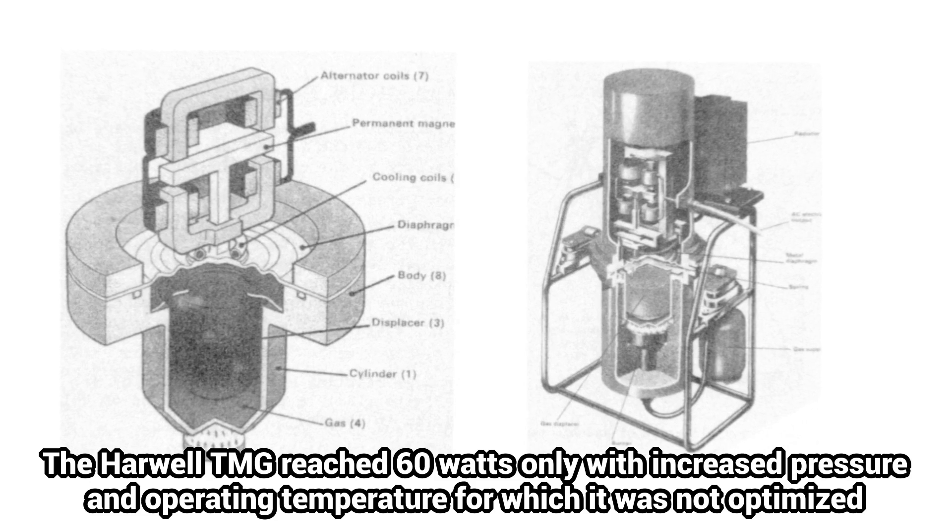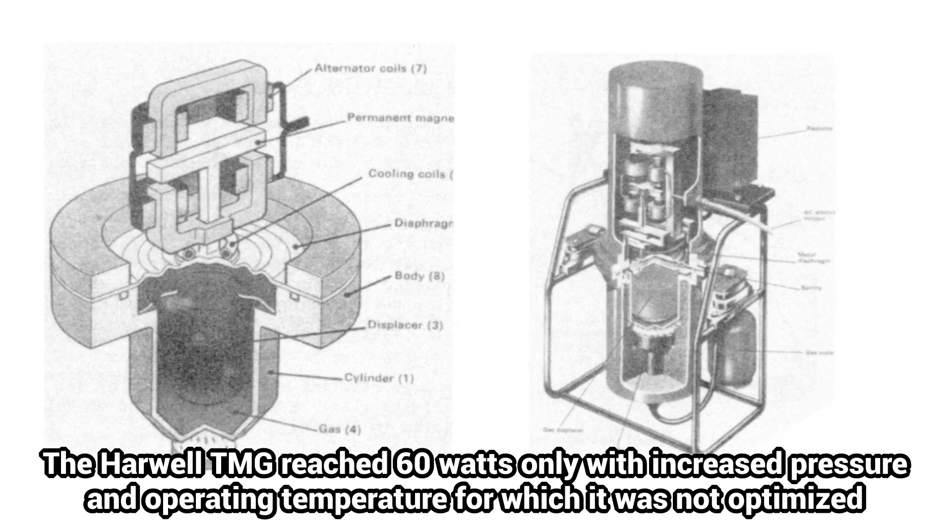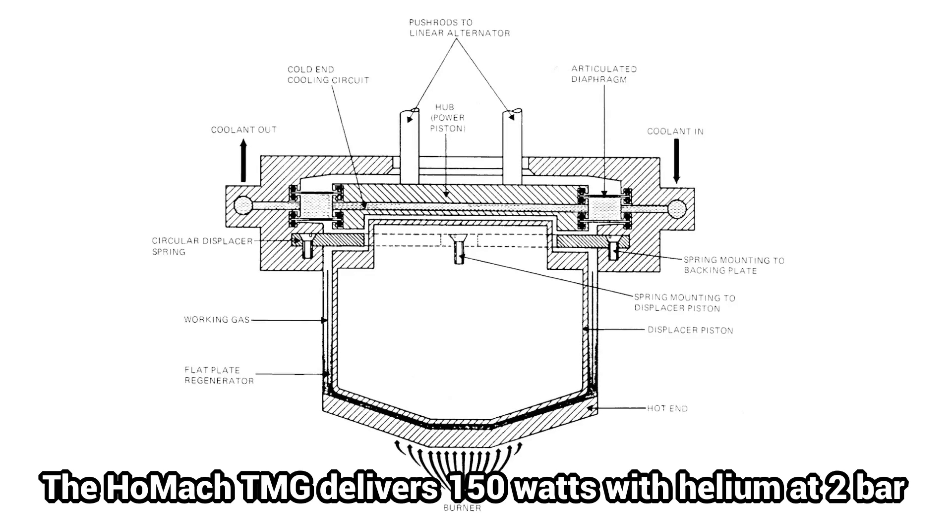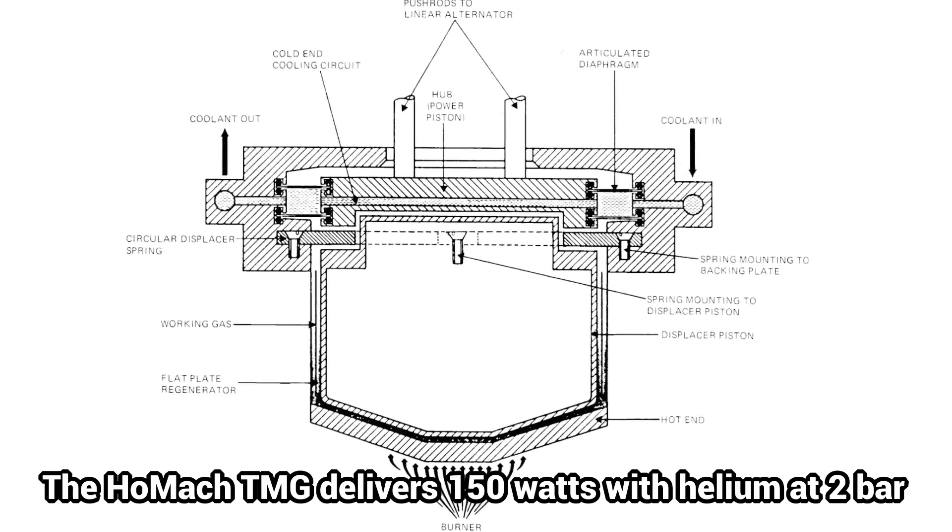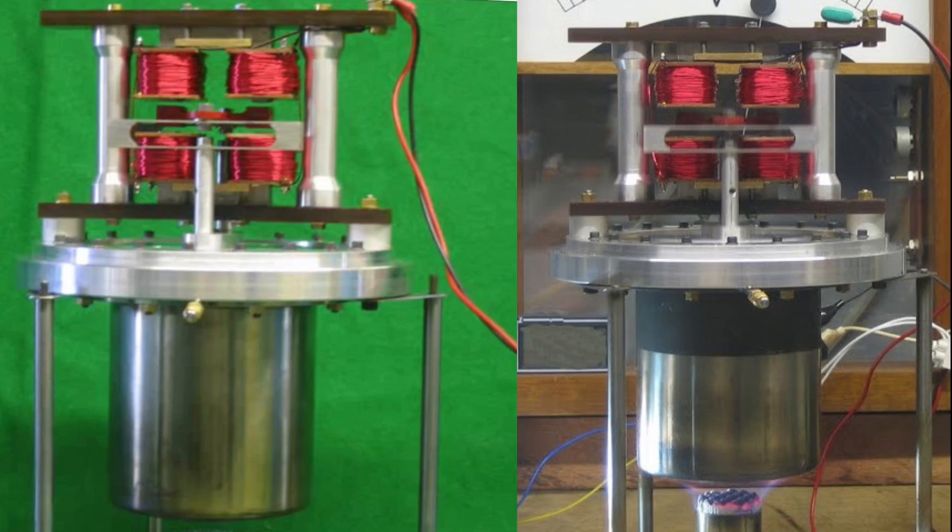The original Harwell TMG reached 25 to 60 watts while the later much larger HOMAC TMG produced 150 watts. The few homemade TMGs I have heard of perform more in the region of five watts.